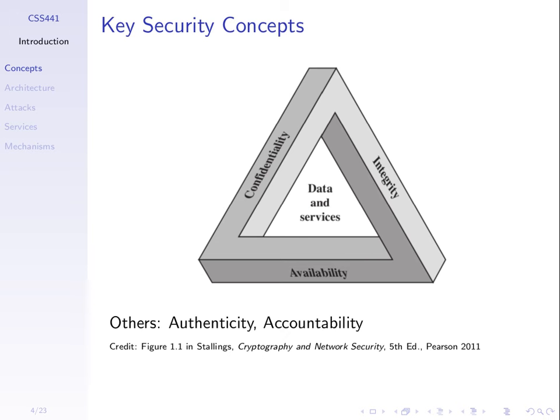Other people use different names for some of those concepts, or add on other objectives like authenticity and accountability, but we'll focus on those three: confidentiality, integrity, and availability.